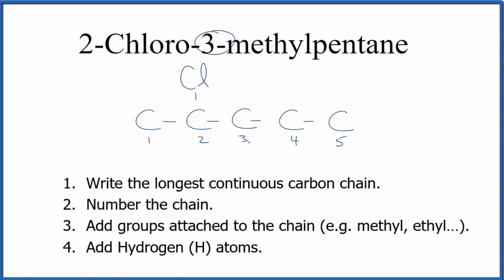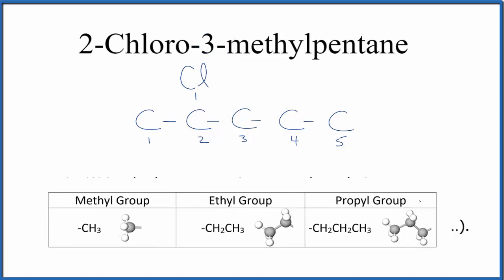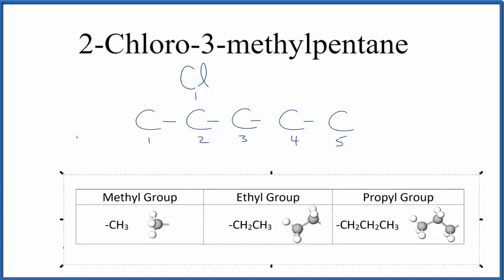Then, on the third carbon right here, we'll put a methyl group. A methyl group, these are the common groups you'll see. Methyl group is just a CH3. It's another carbon surrounded by hydrogens. So, we'll add that on the third carbon. We could put it up here, or we could put it down here. Let's put it down here, space things out a little bit.